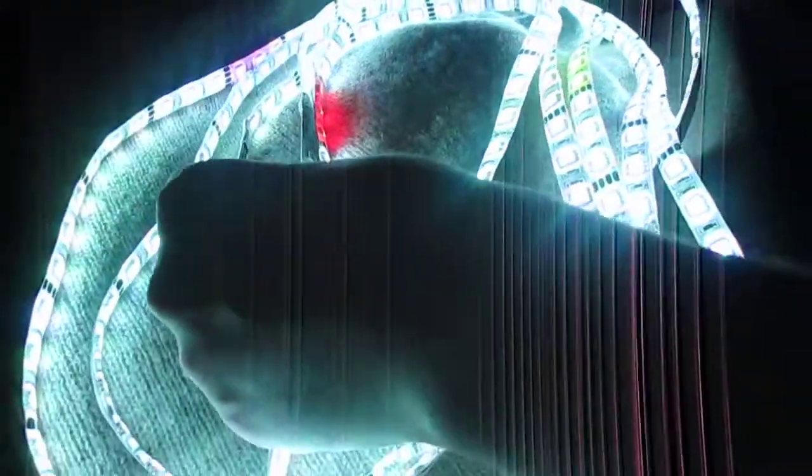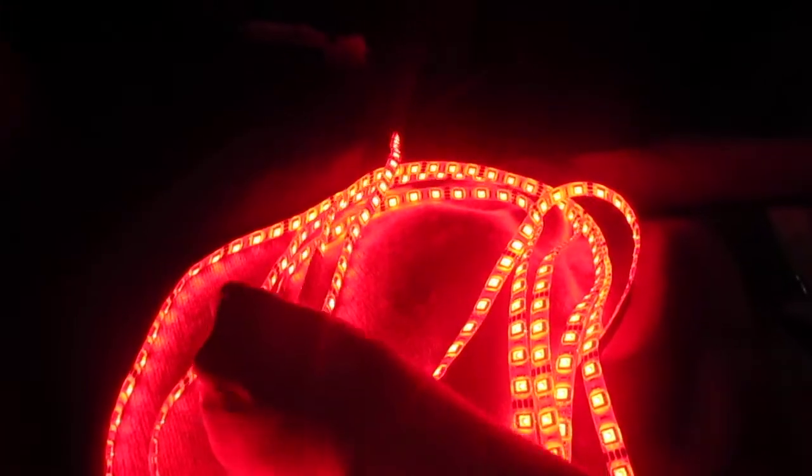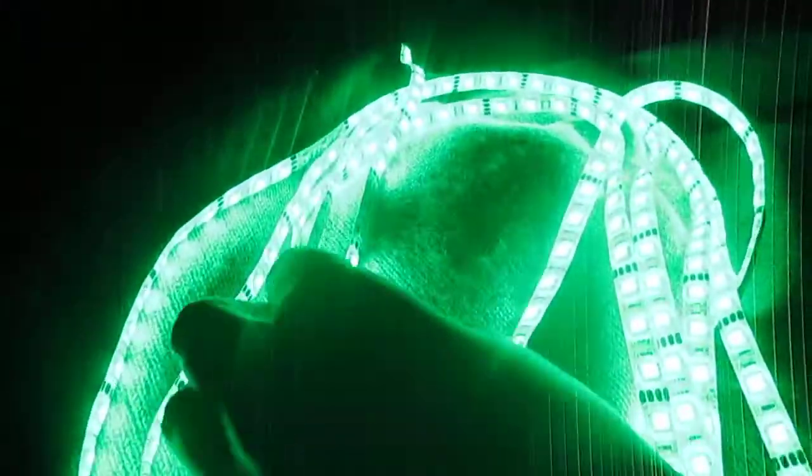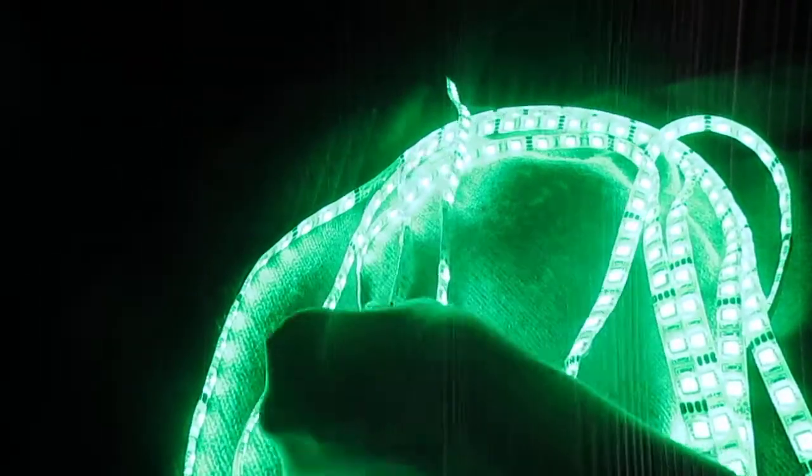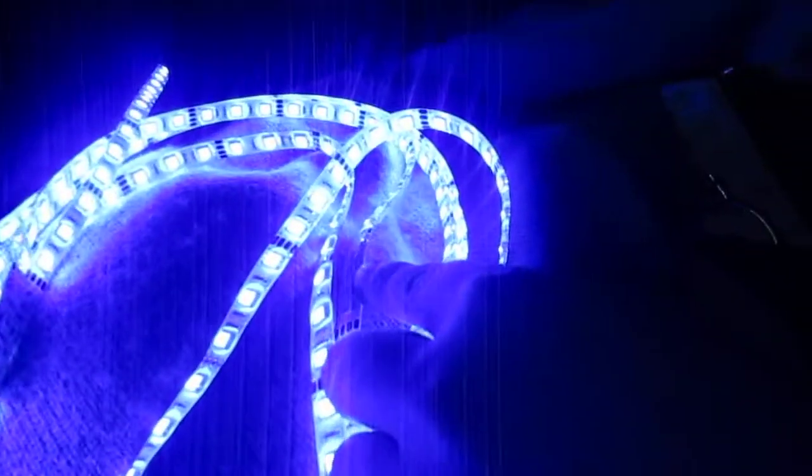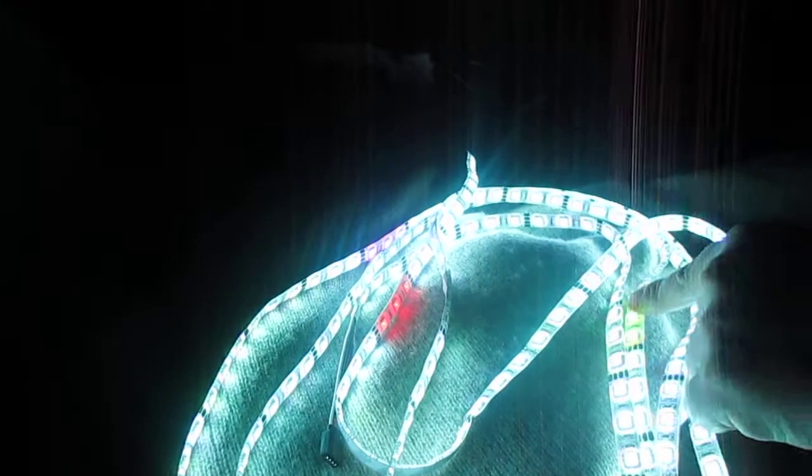It shows more for certain colors than other colors. Like in red, these three lights are out, but at least they're all red. If you go to green, these six lights are out. If you go to blue, three, six, nine lights are out. If you go to white, these three lights are out and these other nine lights are the wrong color.